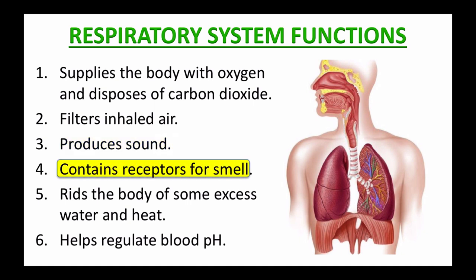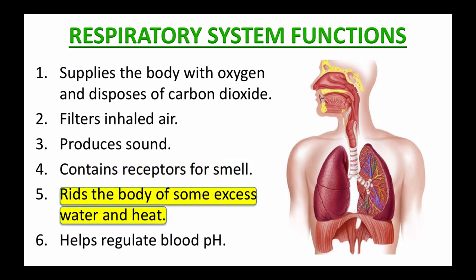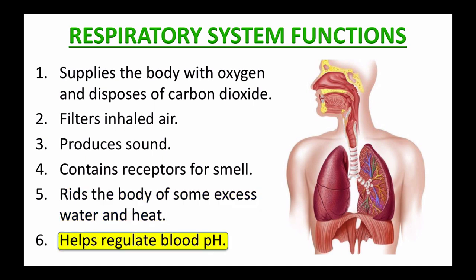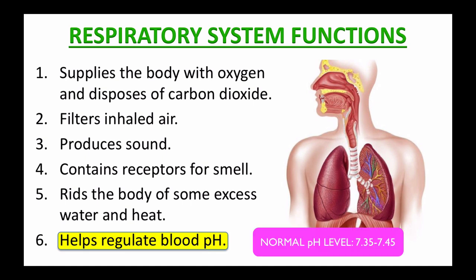Fourth, the respiratory system contains receptors for smell. The nose and nasal cavity sense certain chemicals in the inhaled air, which bind to them and transmit a signal to the brain, which is then identified. Fifth, it helps get rid of some excess water and heat. And last, another key role of the respiratory system is to maintain proper blood pH — the goal is to keep the pH level of the bloodstream within the normal neutral range, which is around 7.35 to 7.45.